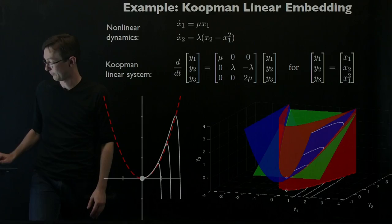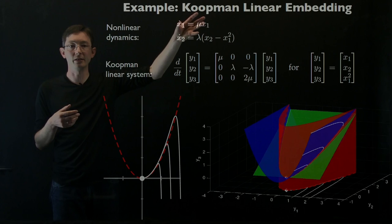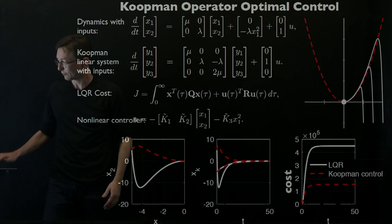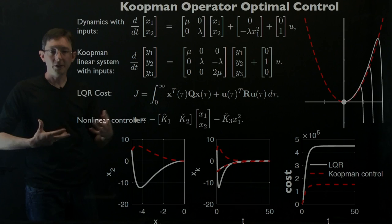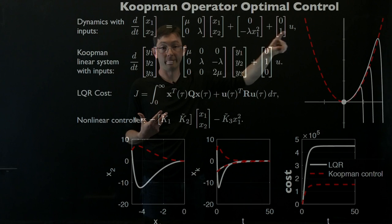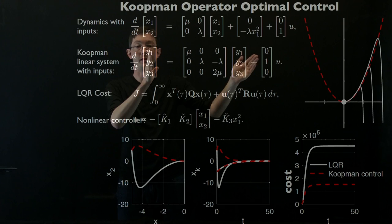This is an example I've talked about before in a lot more depth where you have this nonlinear system, but if you found these good measurement coordinates, these nonlinear measurements, you can get a linear dynamical system representation of these dynamics. If you had that same system with an actuator with some control input u that affects the second state x2, it turns out that in these Koopman coordinates you get a linear control system, y dot equals a y plus b u, and that linear dynamical system encodes this nonlinear control problem.